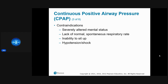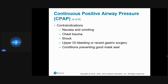Contraindications for CPAP: the patient cannot be severely altered, they must have spontaneous respirations, they must be able to sit up, and they cannot be hypotensive or in a shock state. If systolic blood pressure is below 90, CPAP is contraindicated. Nausea and vomiting is also a contraindication — positive pressure would push vomit into the airway causing aspiration. Any chest trauma or pneumothorax is also a contraindication.